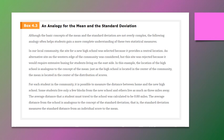Here's an analogy: in a local community, a new high school was selected for its central location — an alternate site on the western edge was rejected because it would require extensive busing for students on the east side. The location of the high school is analogous to the mean. The average distance students must travel to school — calculated at 0.8 miles — is analogous to the standard deviation: it measures the standard distance from each individual score to the mean.